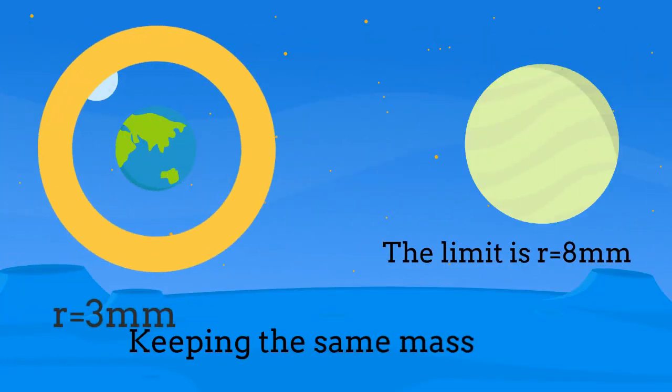But how could then the Earth become a black hole? The Earth's radius is 6,371 km. If we could compactify the total mass of the Earth inside a radius of only 8 mm, we would have a black hole. Let's assume, for example, that we compactify our planet to only 3 mm of radius. This would be for sure a black hole.